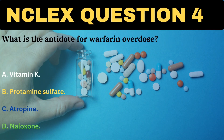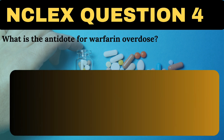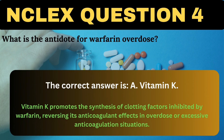What is the antidote for warfarin overdose? A. Vitamin K. B. Protamine sulfate. C. Atropine. D. Naloxone. The correct answer is A, Vitamin K. Vitamin K promotes the synthesis of clotting factors inhibited by warfarin, reversing its anticoagulant effects in overdose or excessive anticoagulation situations.